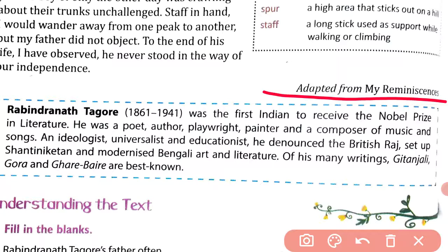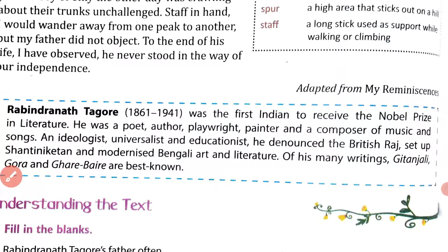He denounced — denounced means publicly declared to be wrong or evil — he denounced the British Raj. He set up Shantiniketan and modernized Bengali art and literature. Of his many writings, Gitanjali, Gora, and Ghare Baire are the best known. This is about the author Rabindranath Tagore.